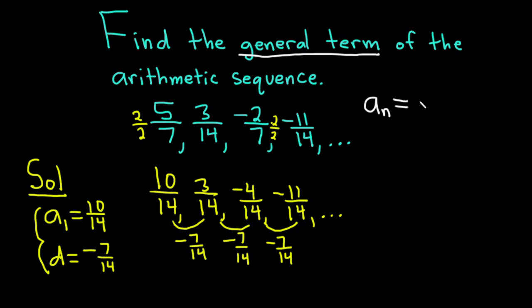And it's equal to the first term, which is a sub 1, plus n minus 1 times d. So n minus 1 times d. Or said another way, it's the first term plus n minus 1 common differences. d is called the common difference.